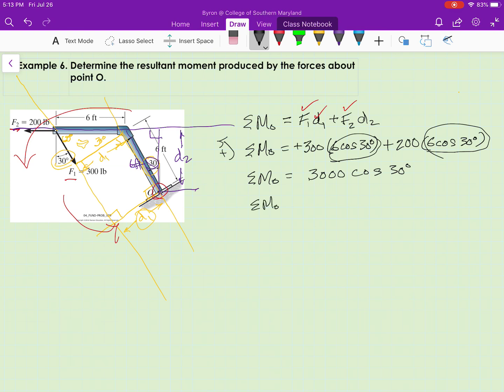So the sum of the moments about O equals, I do that math on my calculator, 2,598.076. I round to 3 significant figures and get 2,600.